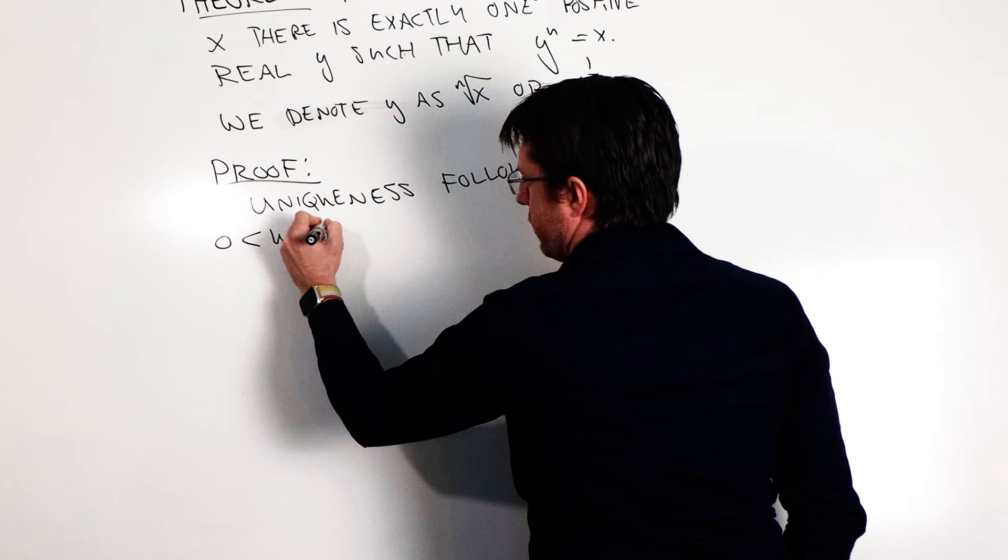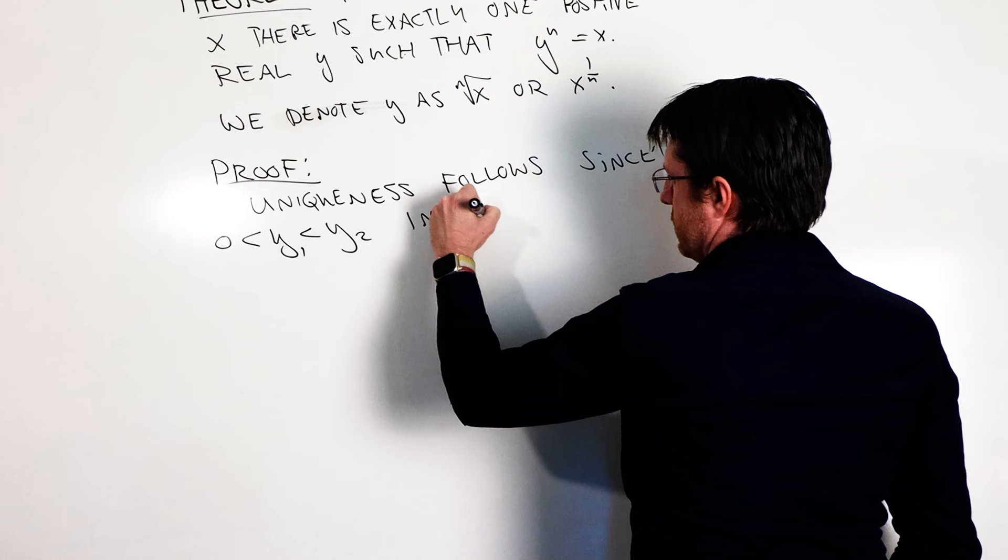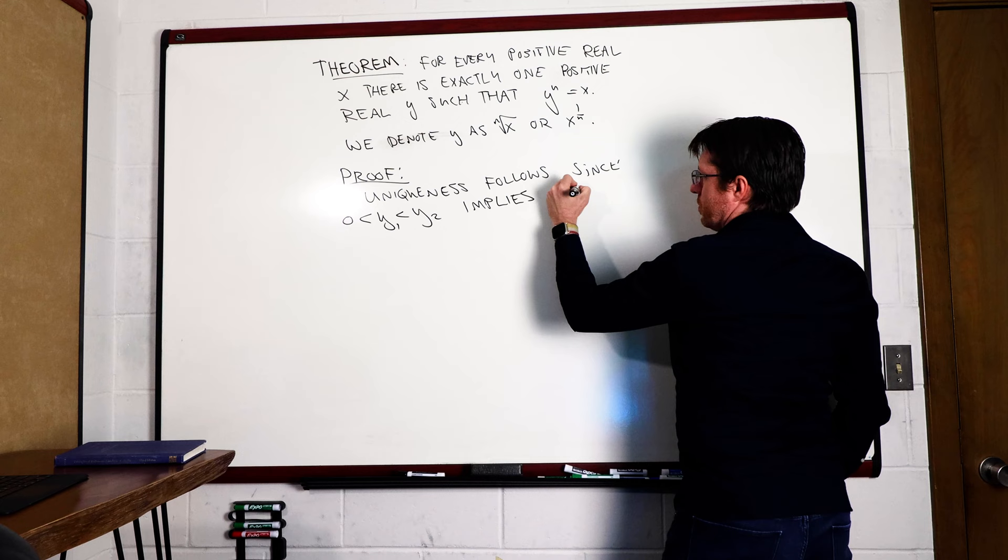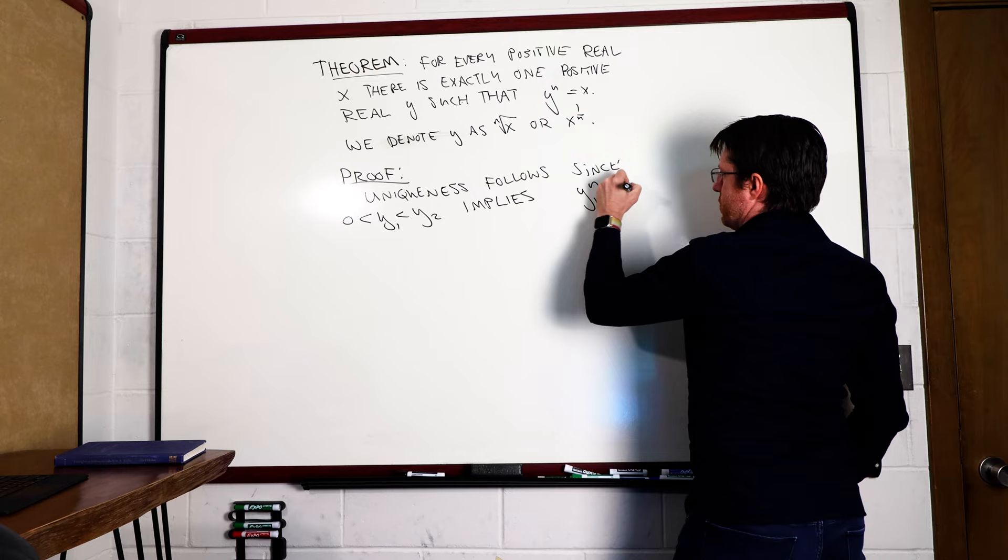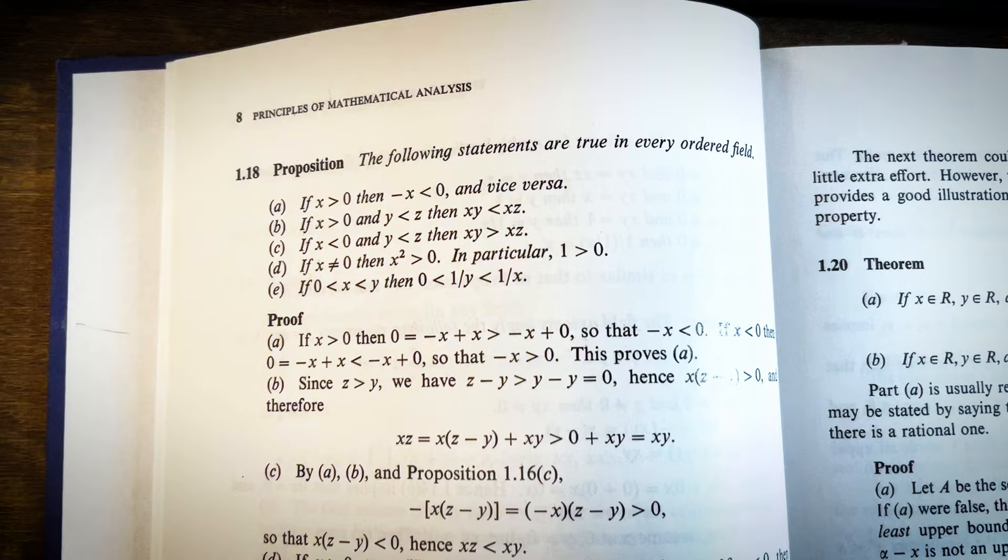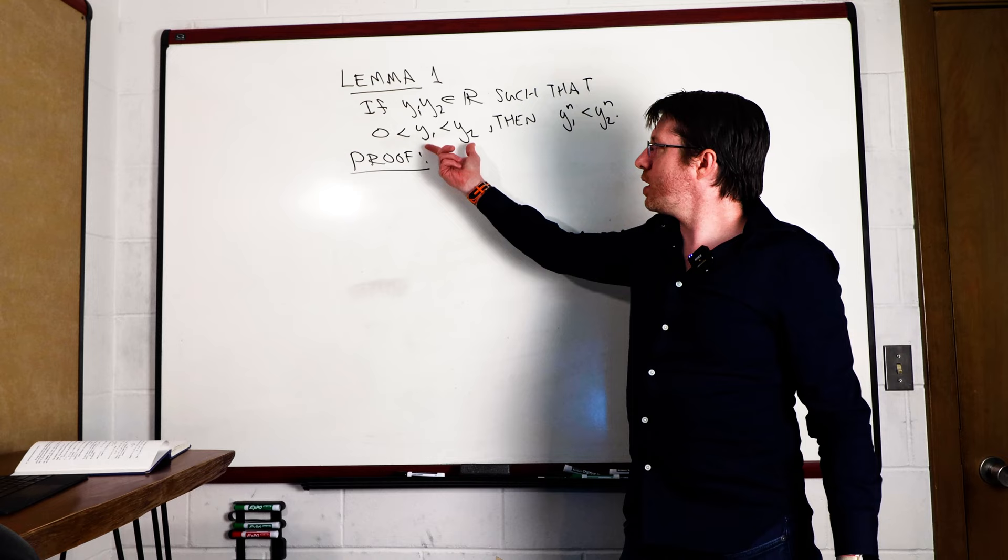The proof moves to immediately dispatch the uniqueness result by saying that this is clear, since if 0 is less than y1 which is less than y2, then y1 raised to the nth power is less than y2 raised to the nth power. We have already hit a new lemma that we need to prove. Nowhere in the preceding pages did we prove a result like that. What we do know is that if y1 is less than y2, then we can multiply both sides by a positive real number and maintain the inequality. That's Proposition 1.18b, by the way. All right, so what we do is we just start with what we know.